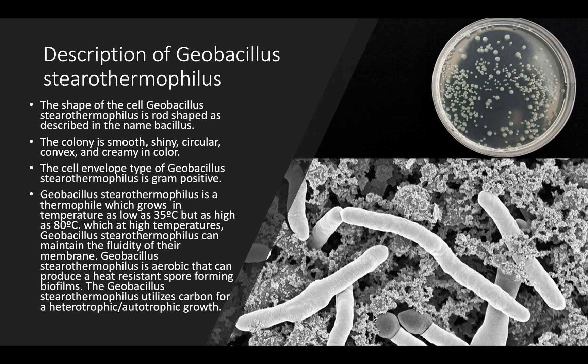When looking at the bacterial growth of the colony of Geobacillus stearothermophilus on an agar plate, it's described as being smooth, shiny, circular, convex, and cream in color. The cell envelope is gram-positive, which will be further discussed later in this PowerPoint.